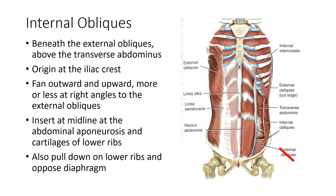The internal obliques are a set of oblique muscle fibers beneath the external obliques. They come from the iliac crest and the hip, fanning outward and upward — anteriorly and superiorly — and are more or less at right angles to the external obliques. They insert into the abdominal aponeurosis and the cartilages of the lower ribs, so they will pull down on the lower ribs and also compress the abdominal viscera.